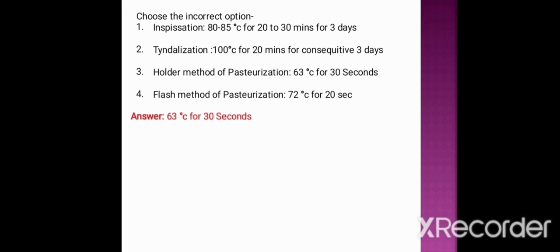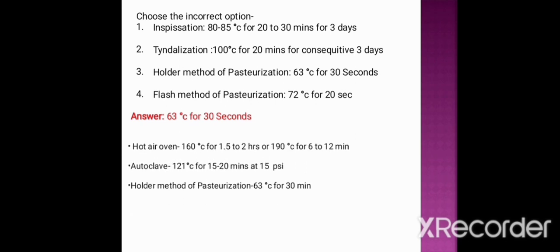We have already discussed that in the holder method of pasteurization, you hold for some time — it should not be seconds, it should be minutes. So the holder method is done at 63 degrees centigrade for 30 minutes, making option three the incorrect option. Inspissation at 80 to 85 degrees centigrade for 20 to 30 minutes for three consecutive days is correct. Tindalization at 100 degrees centigrade for three consecutive days is correct. The flash method at 72 degrees centigrade for 20 seconds is also correct.